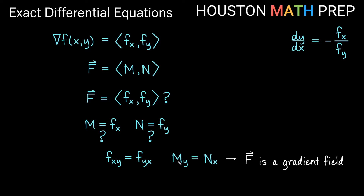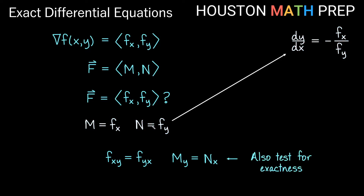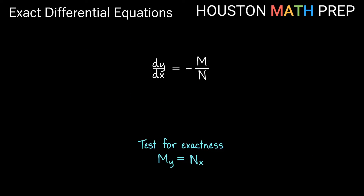This condition — the partial derivative of M with respect to y equaling the partial derivative of N with respect to x — is also our test for exactness to determine if something is an exact first-order differential equation. If M is fx and N is fy, plugging into our implicit differentiation statement gives dy/dx equals negative M over N. This can be rearranged more nicely as M dx plus N dy equals zero, and the way we test for exactness is to check whether ∂M/∂y equals ∂N/∂x.